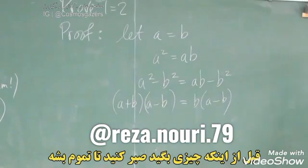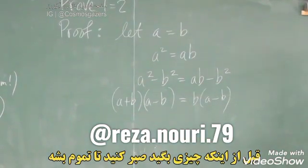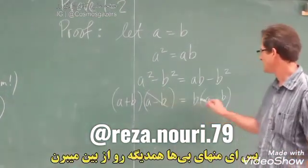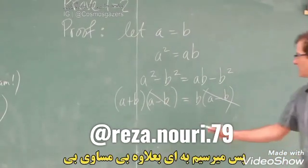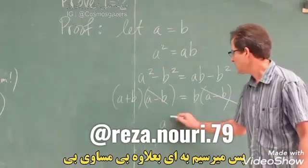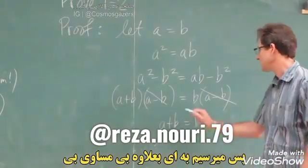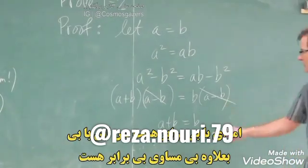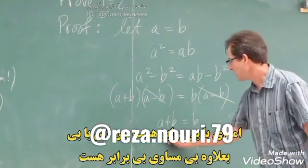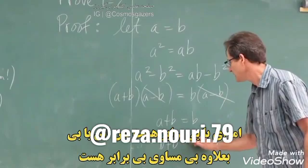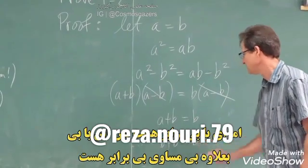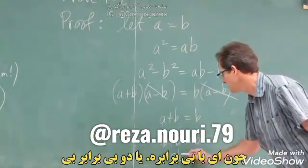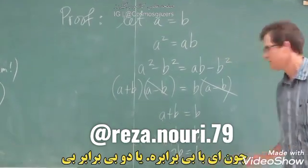Now, at this point I can divide both sides by A minus B — in other words, just cancel A minus B. So I get A plus B equals B. But A is equal to B, so that's the same as B plus B equals B, because A is equal to B. Or: 2B equals B.